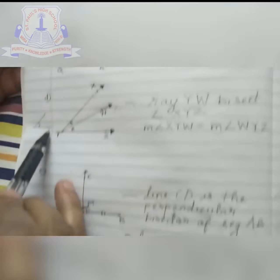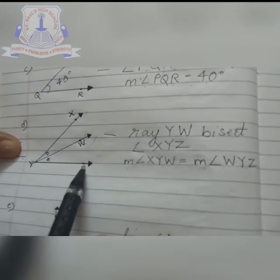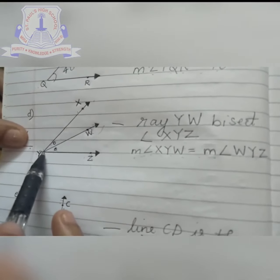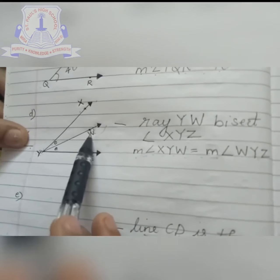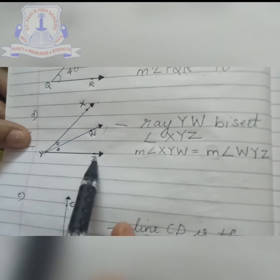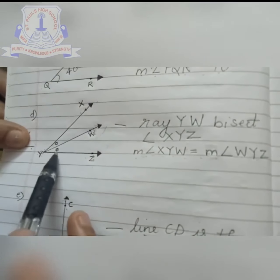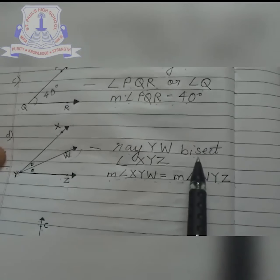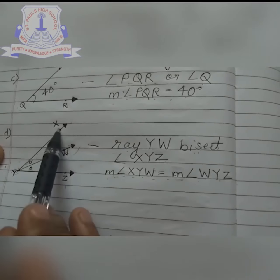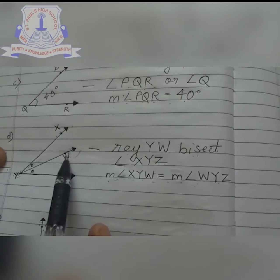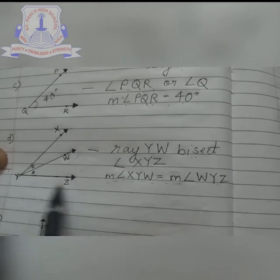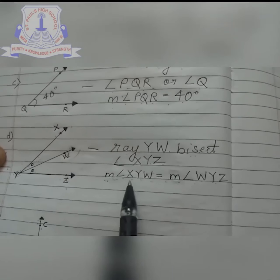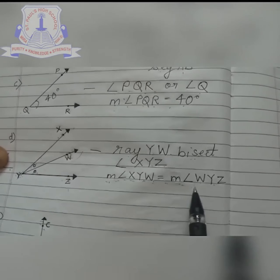The fourth figure shows angle XYZ. In between you can see a ray — one end is a dot, another end is an arrow. Ray YW is dividing angle XYZ into two equal halves. Two equal halves means both sides are the same. So this figure can be written as: ray YW bisects angle XYZ. If the angle is 60 degrees, then angle XYW will be 30 degrees and angle WYZ will be 30 degrees.